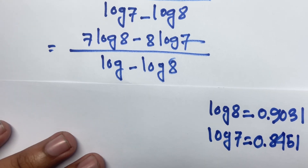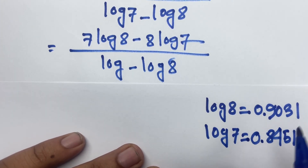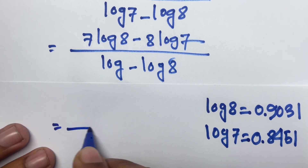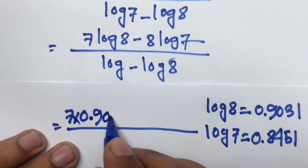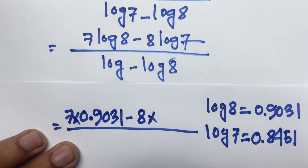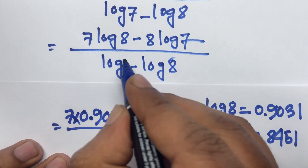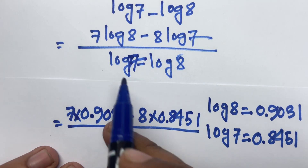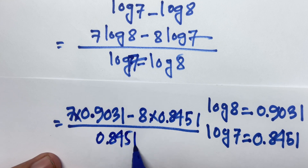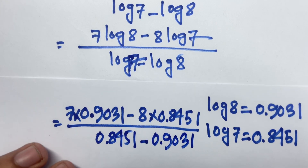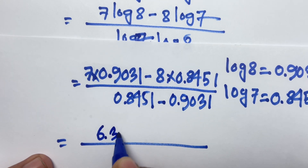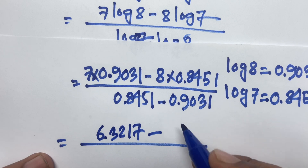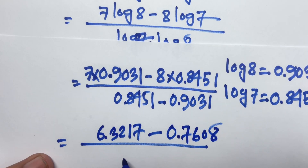Now using a calculator: log 8 equals approximately 0.9031 and log 7 equals approximately 0.8451. So the numerator is 7 times 0.9031 minus 8 times 0.8451, and the denominator is log 7 minus log 8, which is 0.8451 minus 0.9031.